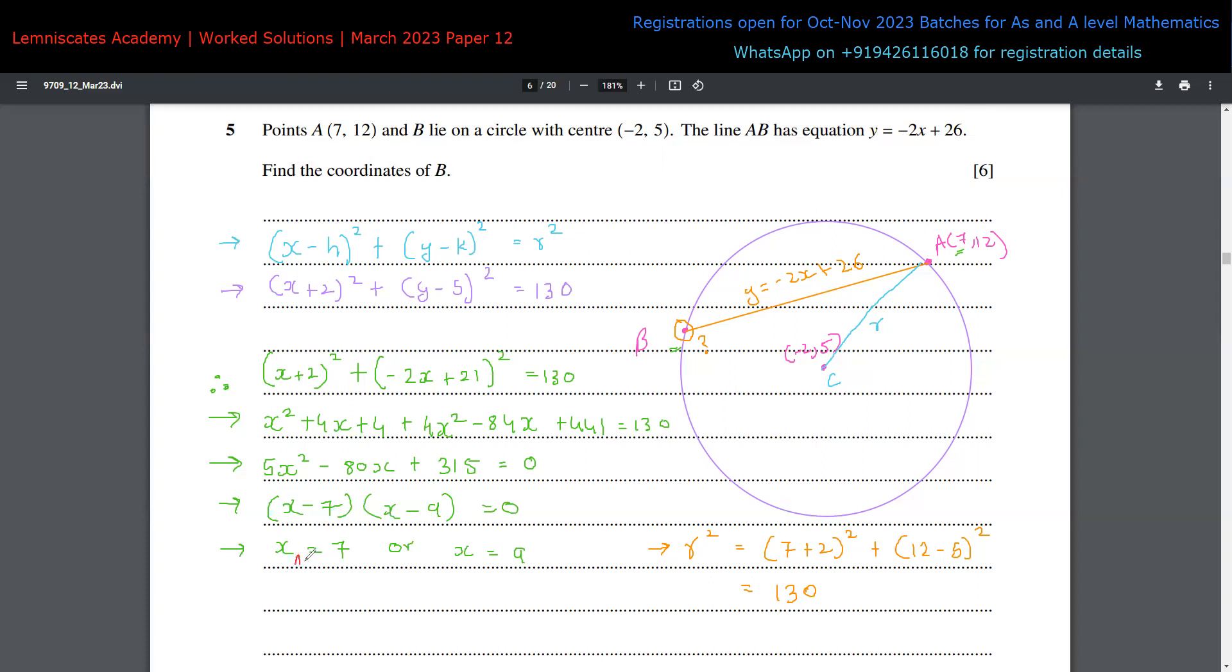The X value of B is 9, but we need the full coordinates. To get the Y value, substitute X = 9 into the line equation: Y_B = -2(9) + 26 = -18 + 26 = 8.